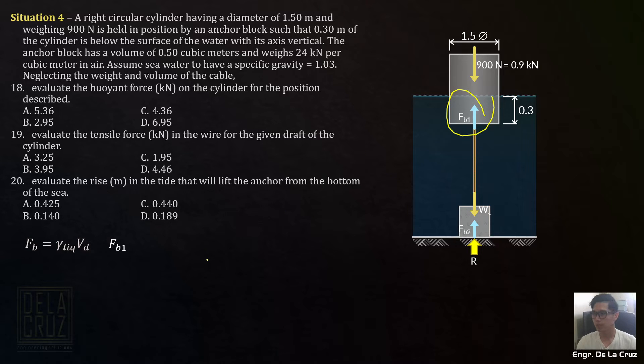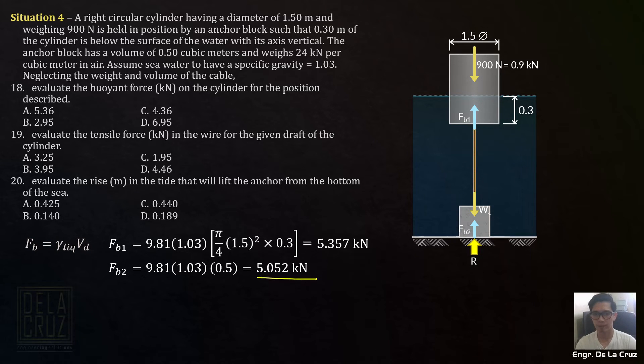So for our FB1, take note, this is seawater. The gamma of seawater is 9.81 times specific gravity. The volume displaced is the portion in water for that cylinder. So it is pi over 4 times diameter squared, diameter is 1.5, the height displaced in water is 0.3 or the submerged portion. So that is our FB1. For FB2, buoyant force on the anchor block, gamma is again 9.81 times 1.03, the volume of this is given directly as 0.5 cubic meters, volume of the anchor block. So multiply it by 0.5. So we have FB2 in kilonewtons.